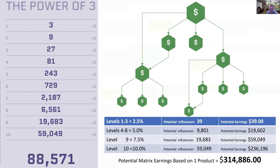That's if everybody only bought one bag. I know the average will be higher than that — some will buy one, some two, some six, some ten. I would say the average will probably be about one and a half. So in a full three-by-ten structure, if everybody purchased one bag, it would be $314,000. If it was a bag and a half, it would be close to $500,000 per month.